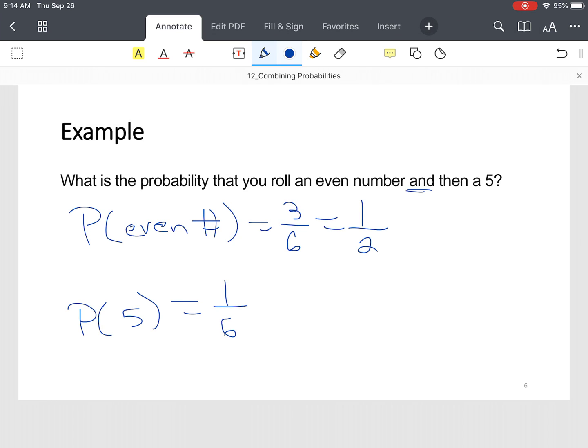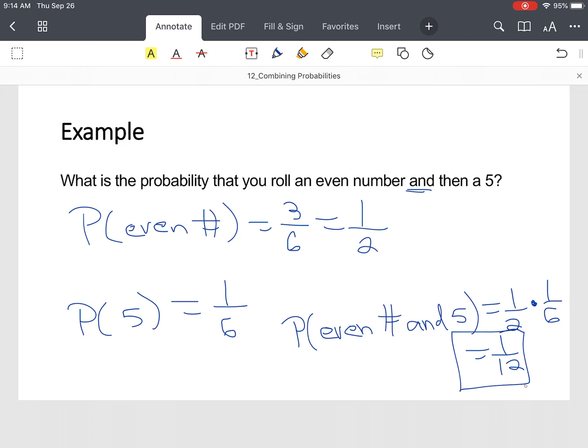So, now, these are both independent events. So, probability of rolling an even number and a five. You multiply a half and a sixth. That's one-twelfth. Okay. So, that's combining probabilities.